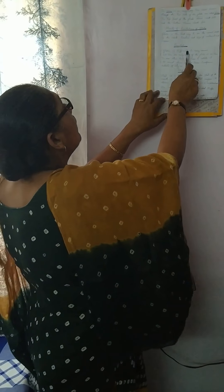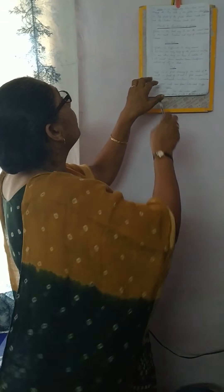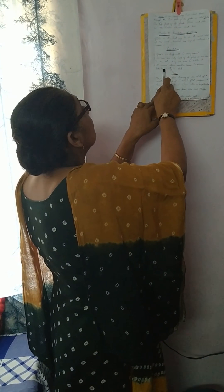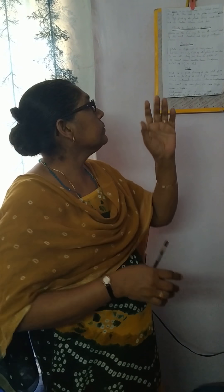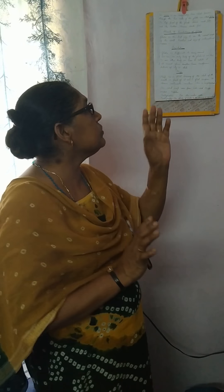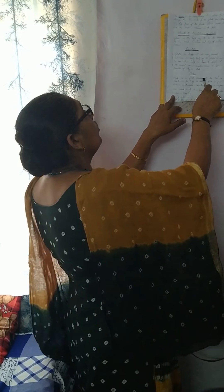What are the limitations of the globe? It is very difficult to carry. We can see only half of the globe at a time — if you want to see the other part, we have to rotate it. It also cannot show smaller towns, landforms, or details of a city or state.